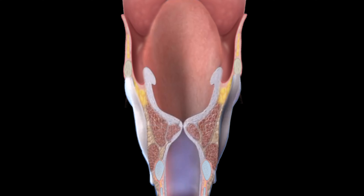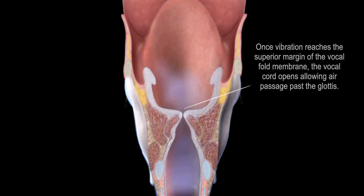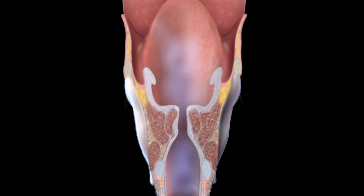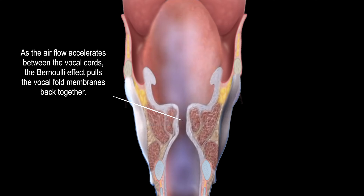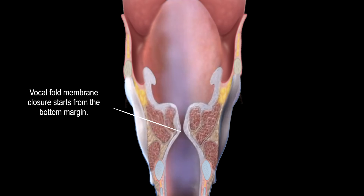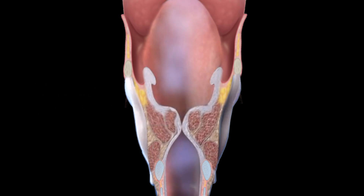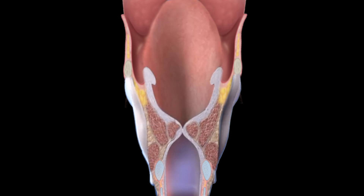As the air pressure continues to move upward, more of the vocal folds open up until it reaches the superior margin, at which point air is fully released between the vocal folds and pushes up towards the pharynx. At this moment, air flow increases and accelerates as it passes the glottis, resulting in a pressure drop due to the Bernoulli effect. This pressure drop causes the vocal fold membranes to be pulled back together. As the lower edges come back together, they drag the upper edges to the midline, and full closure of the vocal folds occurs. The cycle is then repeated.